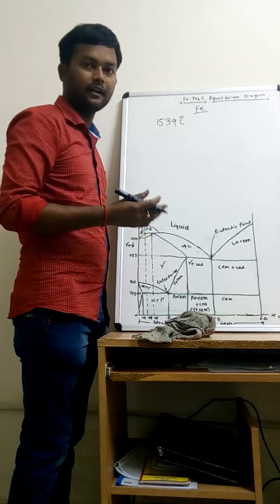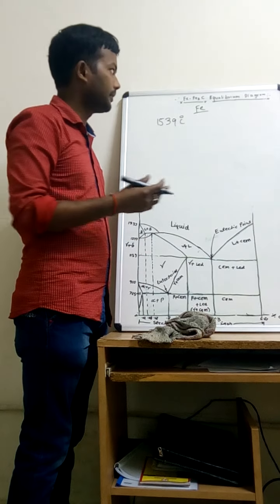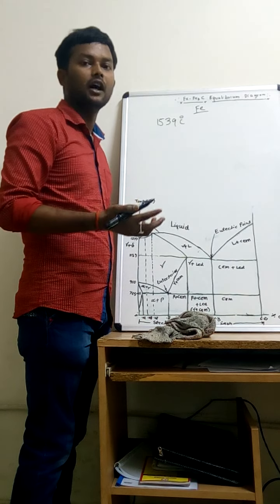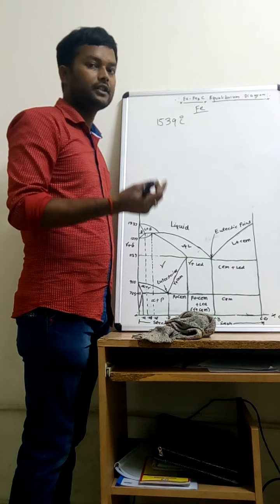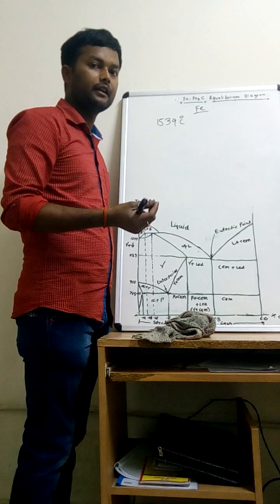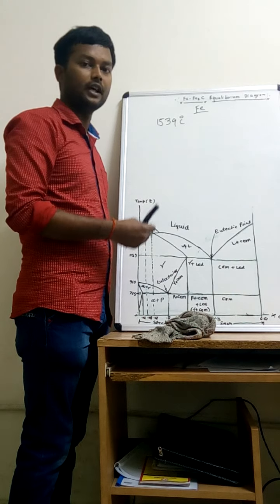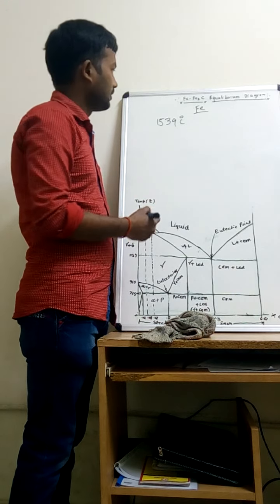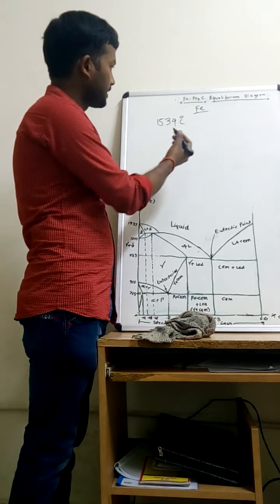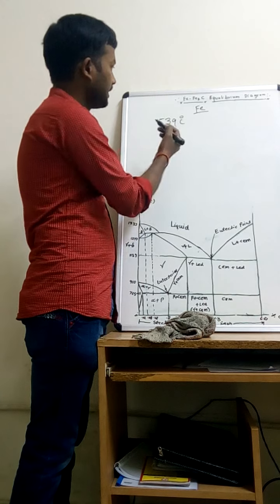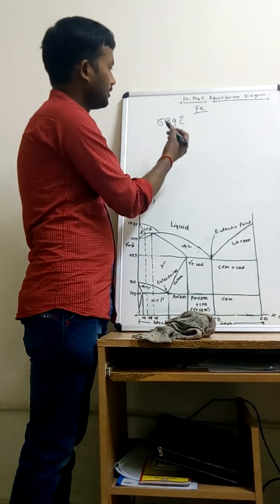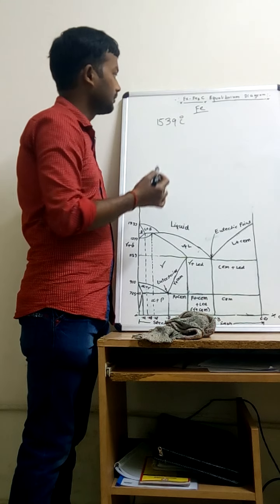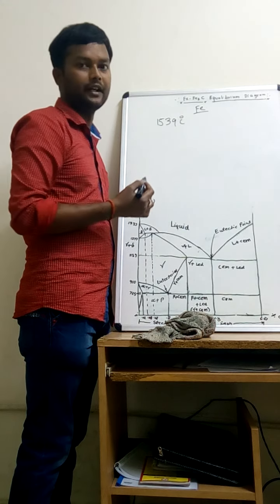Before explaining the iron-carbon equilibrium diagram, I want to explain what iron is, what types of iron exist, what steel is, and what types of steel exist. We start from iron. The melting point of iron is 5039 degrees centigrade.